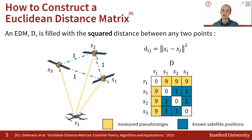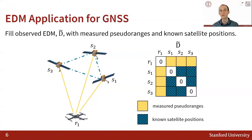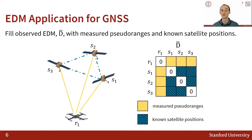Finally, we can use the known satellite positions provided in ephemeris data to determine the distance between each of the satellites and fill in the corresponding bottom right square of the EDM with the squares of those distances. An EDM D is a symmetric matrix filled with the squared distances between all pairs of points in the system. For a GNSS application, those distances come from either measured pseudoranges or can be calculated through known satellite positions. We add a tilde to the EDM notation to represent the fact that our EDM contains observed values that possibly contain noise in both the measured pseudoranges and satellite positions.